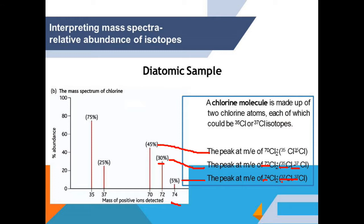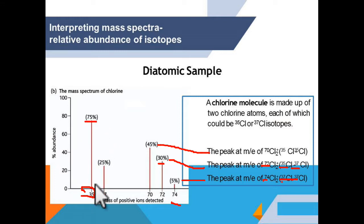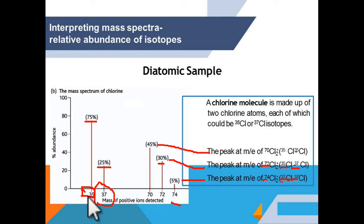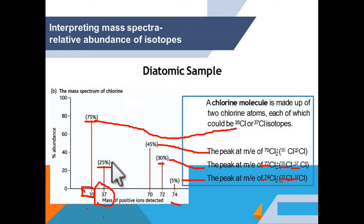What is the proof that chlorine has two isotopes? The answer is here. As you can see, there is a peak with the most abundant relative abundance of 75 — this indicates Cl-35. And we also have a peak at 37 with a relative abundance of 25. This is clear-cut evidence that chlorine has two isotopes: Cl-35 and Cl-37. These peaks correspond to each isotope accordingly.